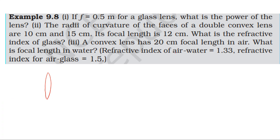In air, the focal length is 20 cm. We use the lens maker's equation with R1 and R2 as the radii of curvature.